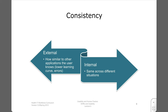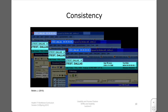Consistency can be external consistency — that is, the system's similarity to other applications the user has encountered — or internal consistency, meaning the system uses similar interface actions for parallel situations. Names and demographic data must be displayed consistently across screens.